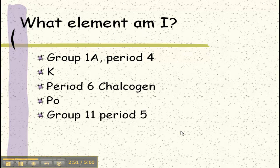In group 11, which would be column 11, period 5, row 5, we would have silver.